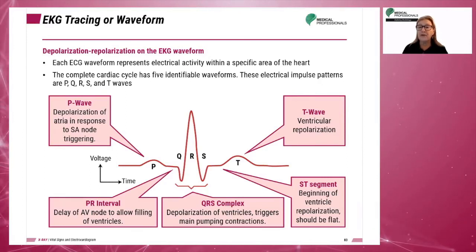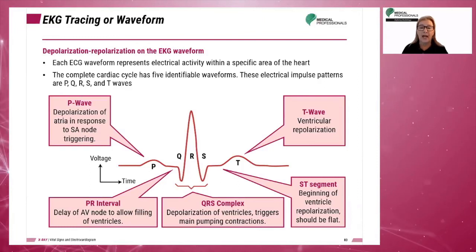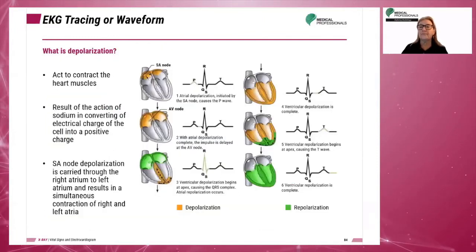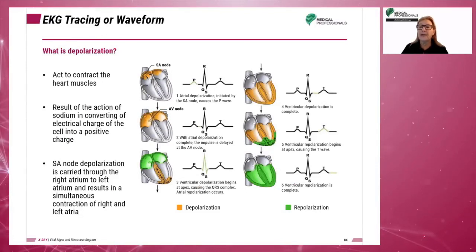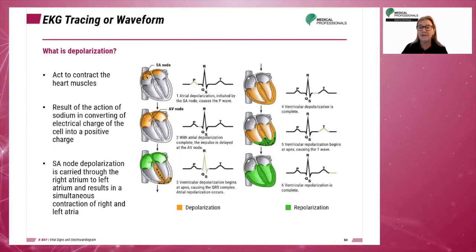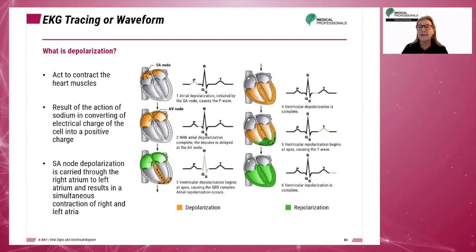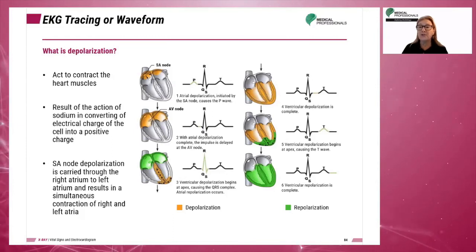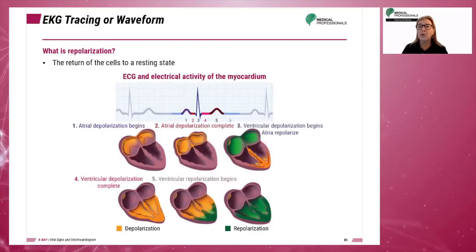The flat portion of the graph between the P and T waves is called the isoelectric line. Depolarization is the act of contraction of the heart muscles, resulting from the action of sodium in converting the electrical charge of the cell into a positive charge. SA node depolarization is carried through the right atrium to the left atrium, resulting in simultaneous contraction of right and left atrium. Repolarization is the return of the cells to a resting state.